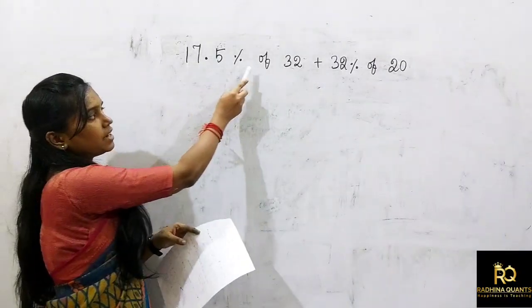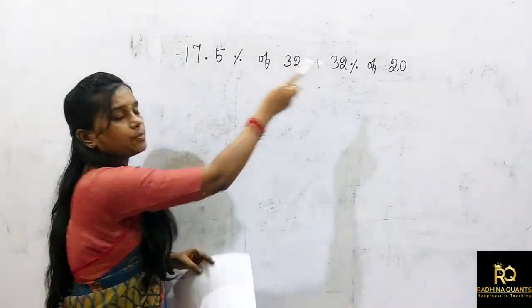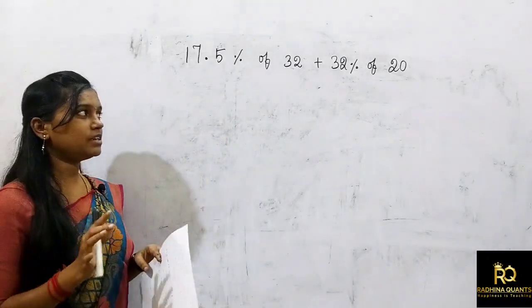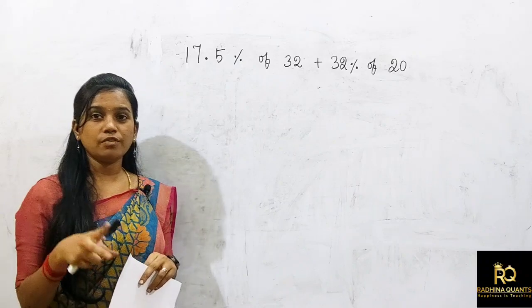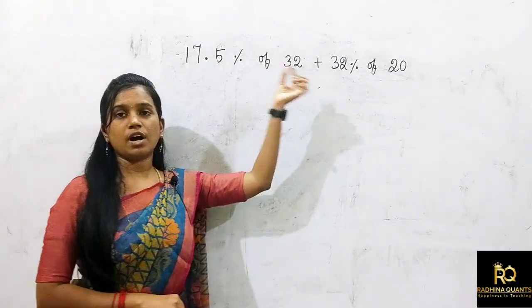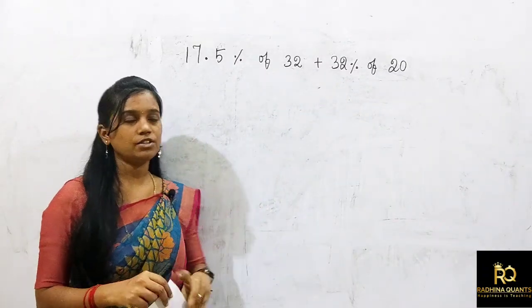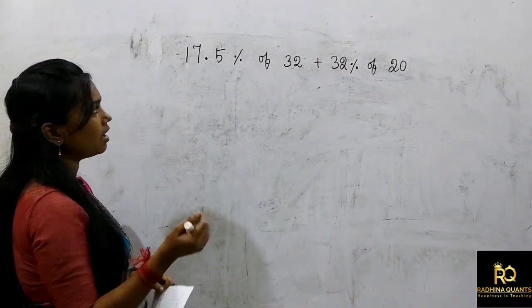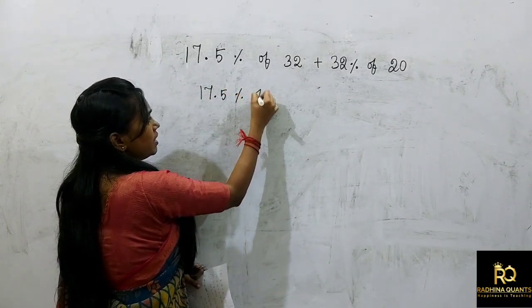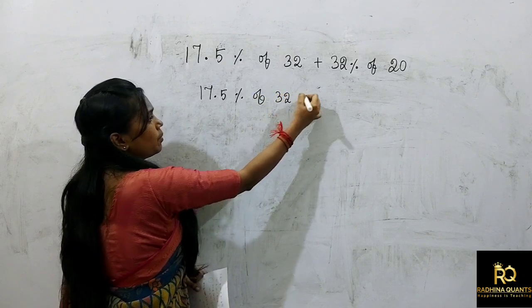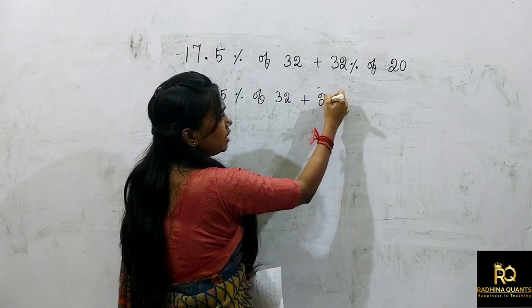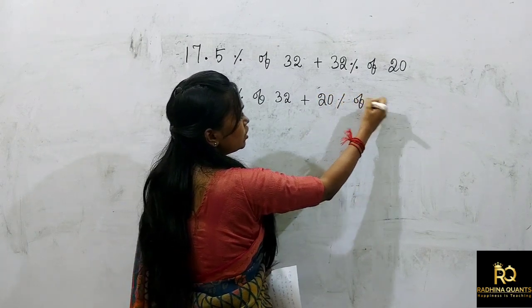Next question: 17.5% of 32 plus 32% of 20. If you look at how you approach this, you might be a little confused. But notice that in the first part there is 32, and in the second part there is also 32. So in the second part, we change it to 20% of 32.